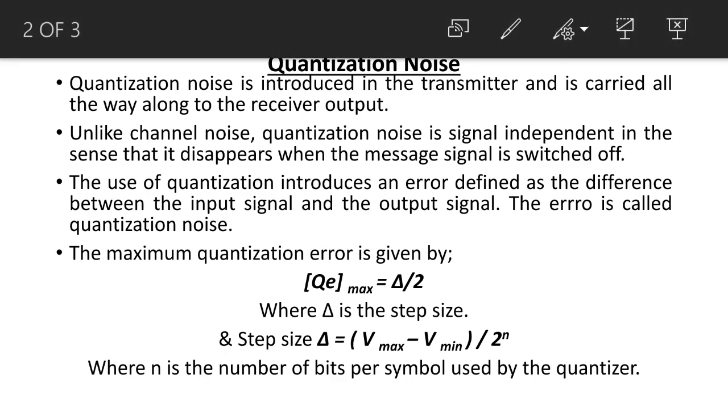Now quantization noise. Quantization noise is introduced in the transmitter and is carried all the way along to the receiver output. Quantization noise can be controlled but it is very difficult to control channel noise. Quantization noise is signal independent, that is, it disappears when the message signal is switched off.